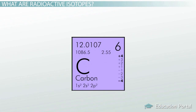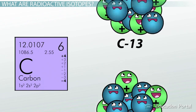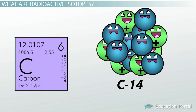For example, carbon has three major stable isotope forms: C-12, which has six protons and six neutrons; C-13, which has six protons and seven neutrons; and C-14, which has six protons and eight neutrons. You get the pattern?